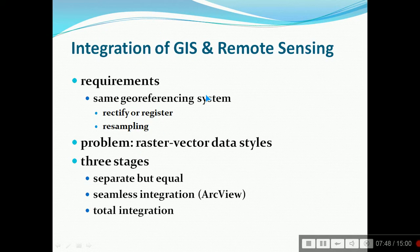Integration of GIS and remote sensing: so far we have known about remote sensing in this presentation. Integration of GIS requirements are same georeferencing system, that means rectification or registration and the same georeferencing system and resampling. Problem is somewhat raster and vector data styles—they are different. Three stages for integration: separate but equal, seamless integration, an example is a GIS database called RPU, now it is RGIS, and then final total integration.